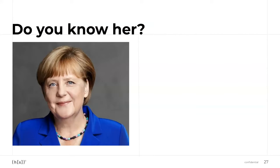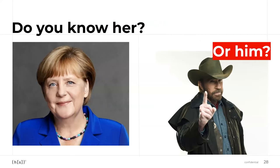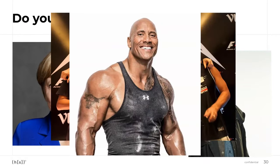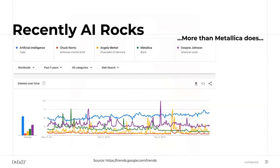Looking at Google Trends, it seems that AI is more searched than Metallica and — ironically — even more than 'the Rock.' AI is getting more and more popular. Many people say AI is the new fuel: as long as you have data, you can train an AI to optimize pretty much anything. And that is great, in my opinion.